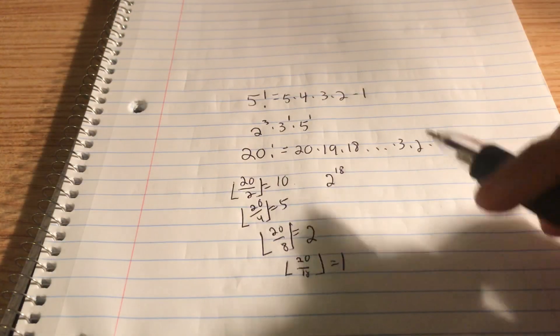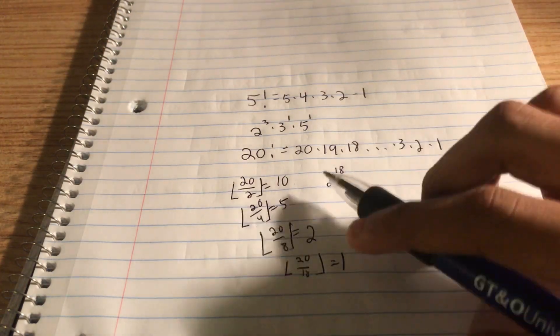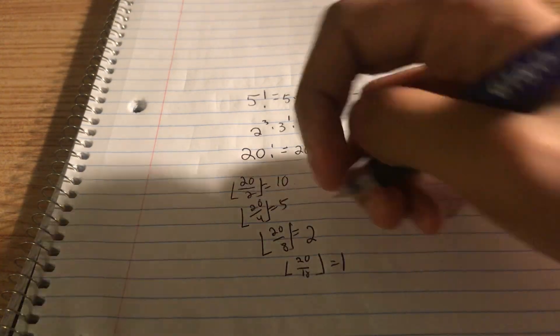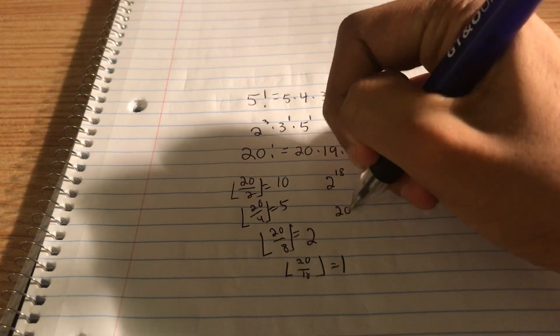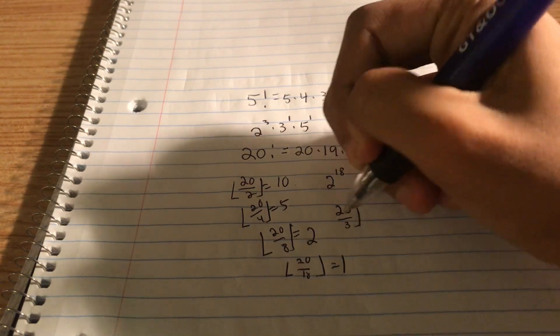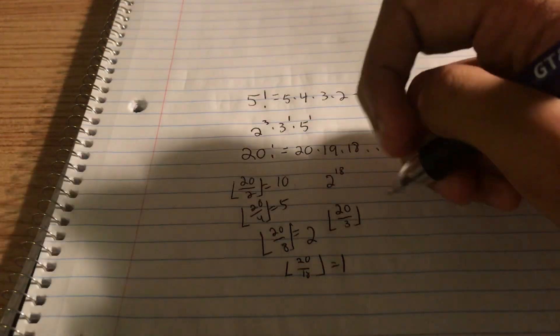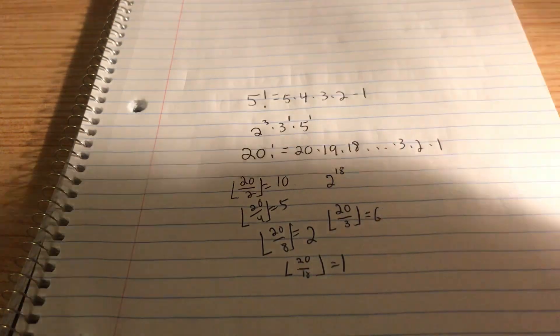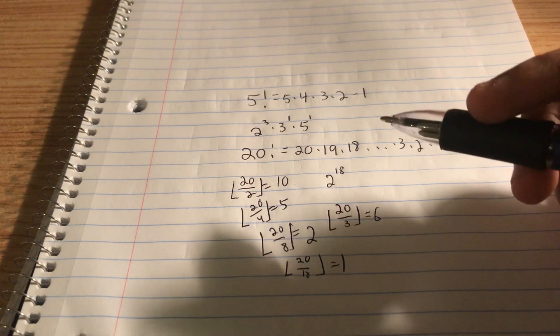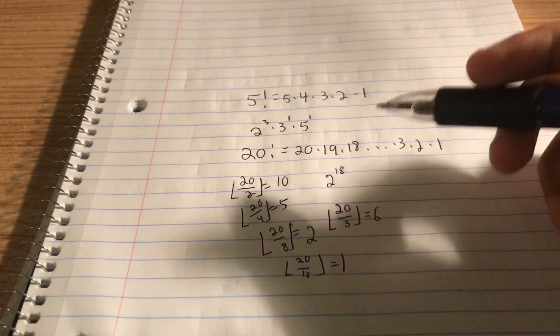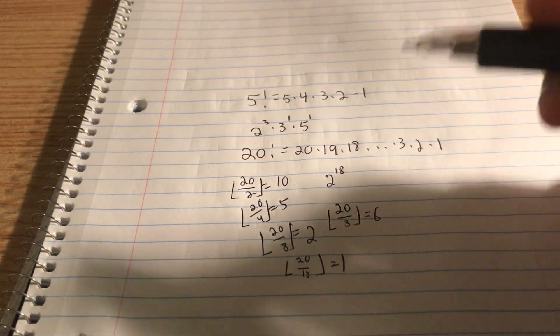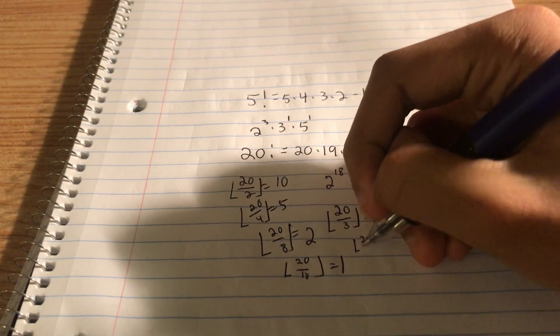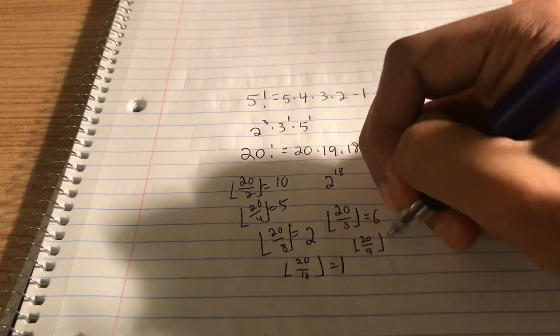3. Well, 3, 6, 9, 12, 15, 18, right? All of those have at least 1 power of 3 in them. Let's do 20 divided by 3, floored. That equals 6. So you got at least 6. Then you got, let's see, 9. 9 is 3 squared, correct? So let's look at the multiples of 9 up to 20. The floor function of 20 divided by 9 is 2.